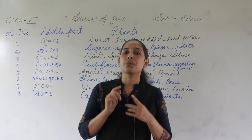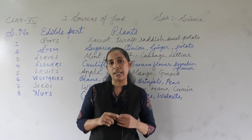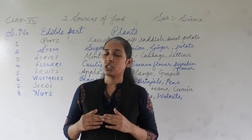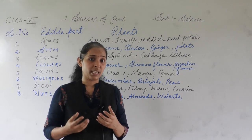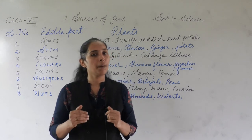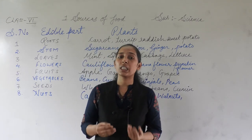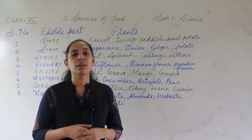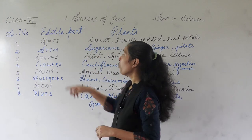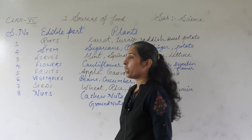There are two main sources of food: plants and animals. If we talk about plants, there are certain parts of a plant that we eat, which are called the edible parts of a plant. Today we will discuss which are the edible parts and what are the examples of those edible parts. Let's start with the first edible part of a plant, that is roots.